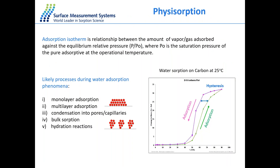This physisorption process can be described by adsorption isotherms — the relationship between the amount of gas adsorbed against the equilibrium relative pressure. The relative pressure P/P₀ is the pressure divided by the saturation pressure of pure adsorbate at the experimental temperature. During the adsorption process — for example, water adsorption on carbon — several phenomena can occur: monolayer adsorption, multilayer adsorption, condensation in pores, bulk adsorption, and hydration reaction. Here we look at the Type IV adsorption isotherm.